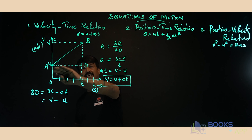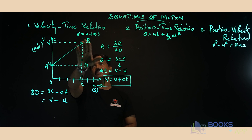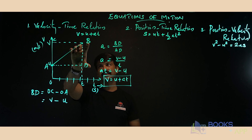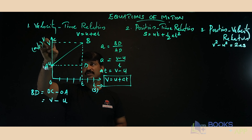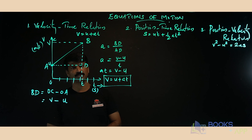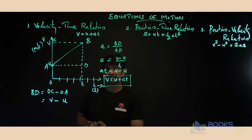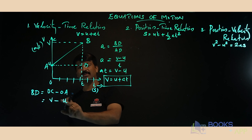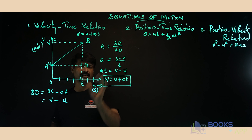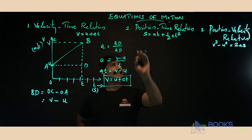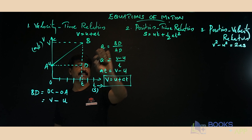To summarize: draw a velocity-time graph with initial velocity u, indicating uniform acceleration. At point B the final velocity is v. From the graph, BD = v - u (that is OC minus OA). The slope gives acceleration: a = BD / AD = (v - u) / t, which gives the first equation of motion v = u + at.